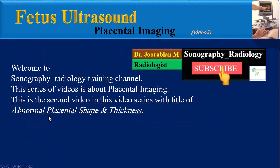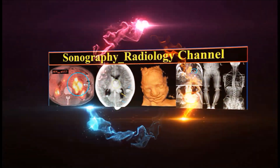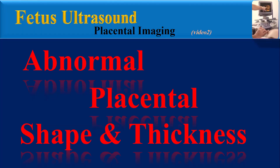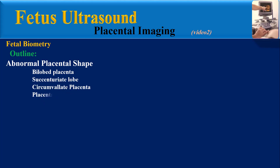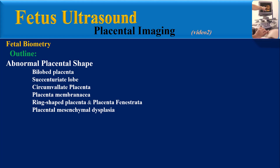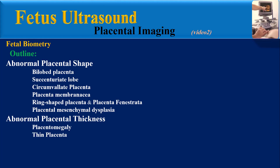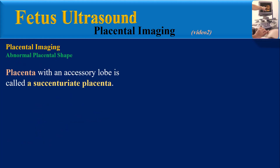Hello, welcome to the Sonography Radiology Training channel. This series of videos is about placental imaging. This is the second video in the series, with the title 'Abnormal Placental Shape and Thickness.' The outline includes abnormal placental shape — bi-lobed placenta, succenturiate lobe, circumvallate placenta, placenta membranacea, ring-shaped placenta, placenta fenestrata, and placental mesenchymal dysplasia — as well as abnormal placental thickness including placentomegaly and thin placenta, followed by final teaching points.